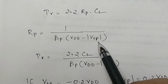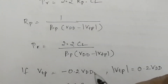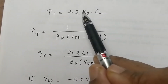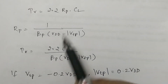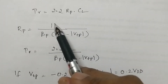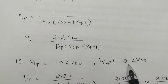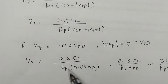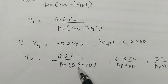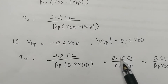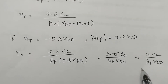Replacing τP with RP·CL, and RP with 1/(βP·(VDD − |VTP|)), and assuming VTP = −0.2·VDD: τR = 2.2·CL / (βP · (VDD − 0.2·VDD)) = 2.2·CL / (βP · 0.8·VDD) = 2.75·CL/(βP·VDD), which is approximated as 3·CL/(βP·VDD) — the same expression obtained in the previous video.